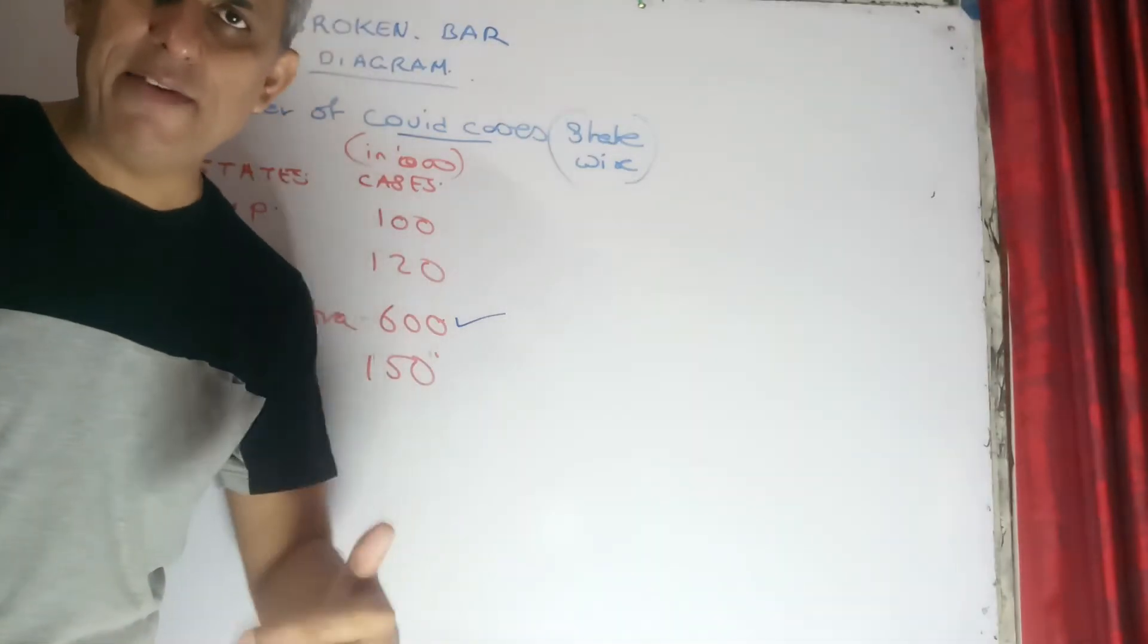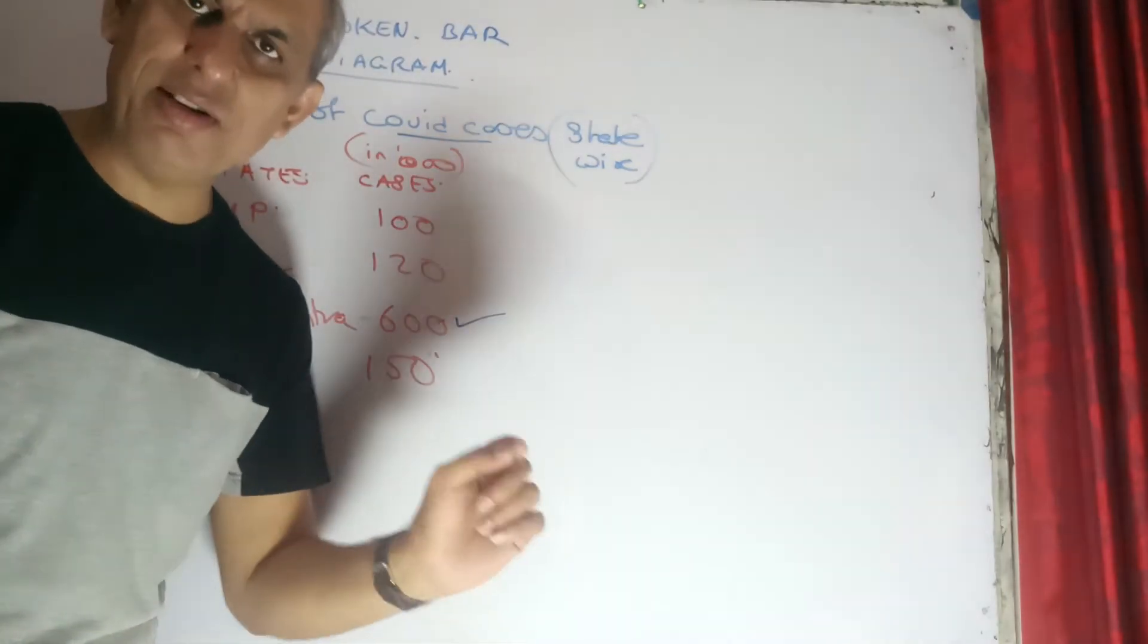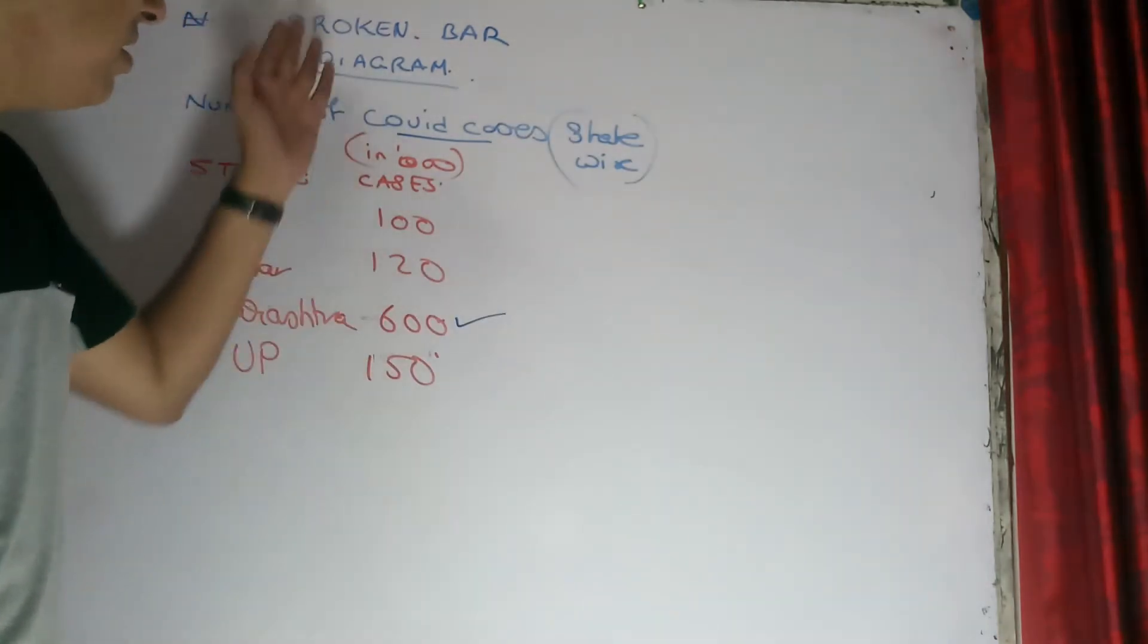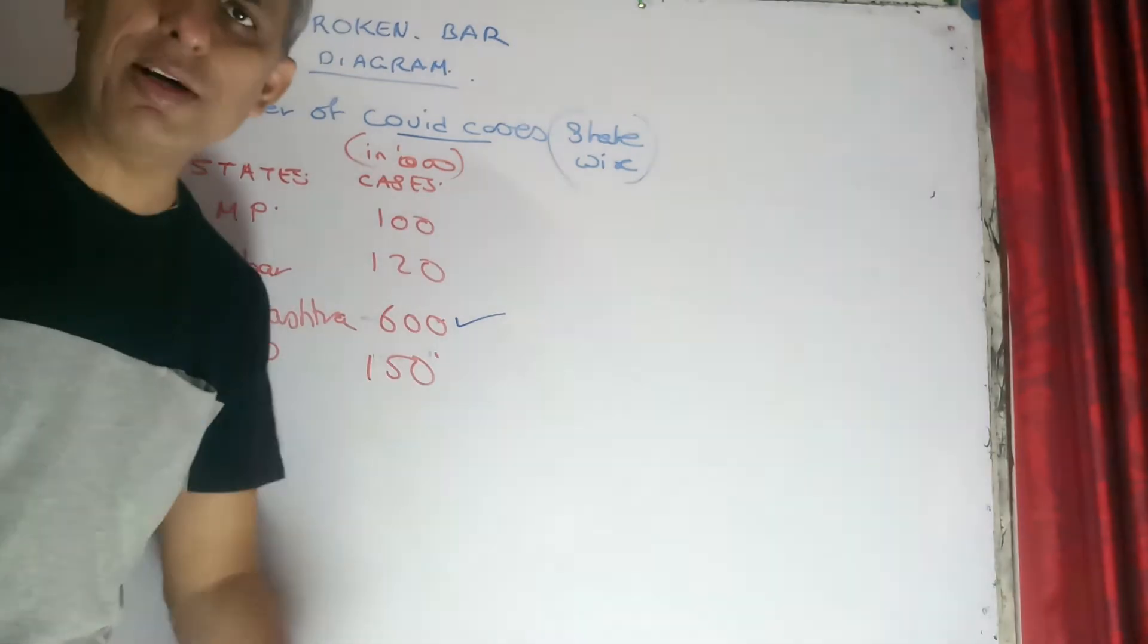A very good morning students. Having covered the varieties of diagrams, especially the one dimensional diagram, let's move on to one more last category of it. As you can see on the top of the board, broken bar diagram.